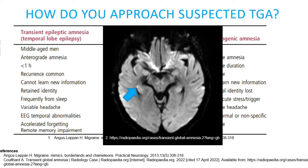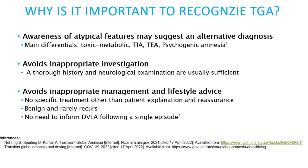So why is it important to recognize transient global amnesia? Firstly, as already discussed, having an awareness of atypical features is important because it can point us in the direction of an alternative diagnosis. It can also avoid patients being referred for inappropriate investigations, which can lead to incidental findings, and avoids patients receiving inappropriate management and lifestyle advice. There is no specific treatment for TGA other than reassurance, as it is considered a benign condition that does not cause any lasting harm.